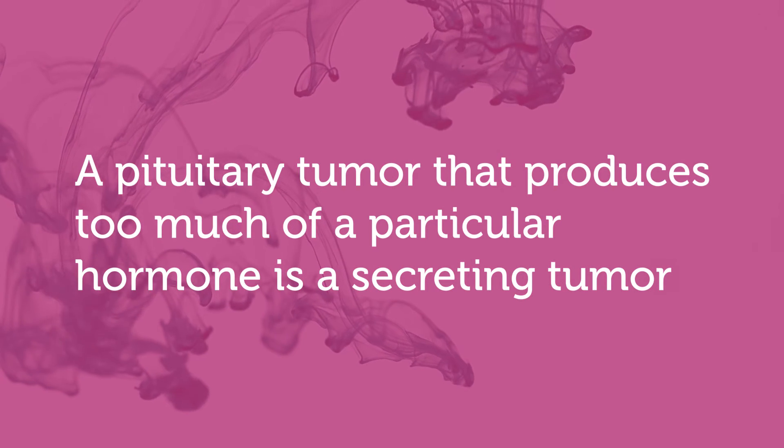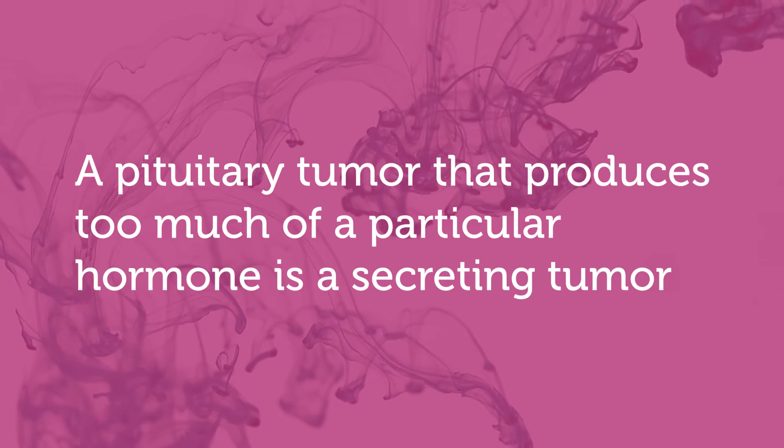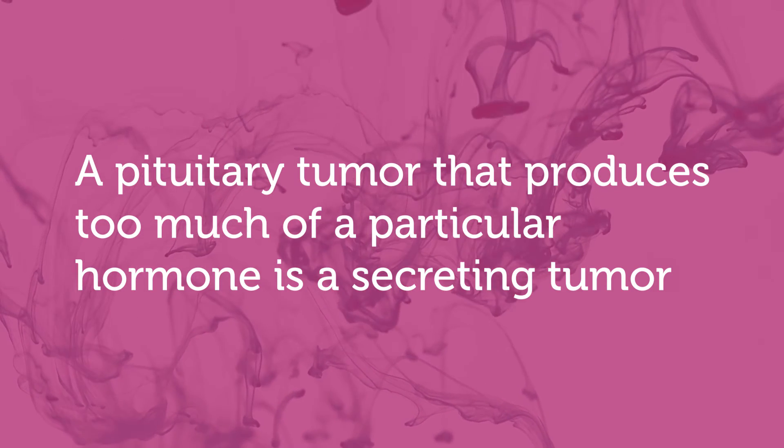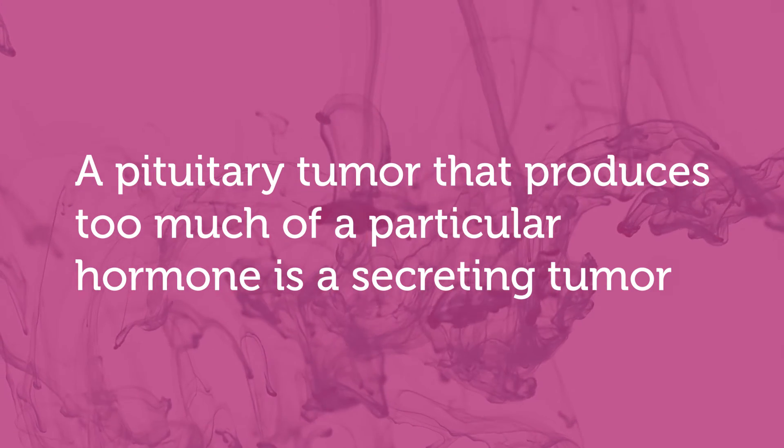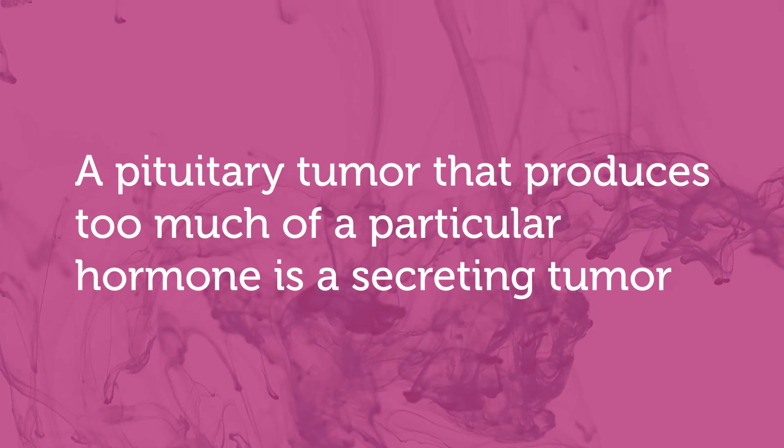The other situation that can arise is when a pituitary tumor produces too much of a particular hormone — in this case we call it a secreting tumor. There are three more common types. The first involves overproduction of prolactin, called a prolactinoma. Excess prolactin can cause enlargement of breast tissue and lactation, or milk production.